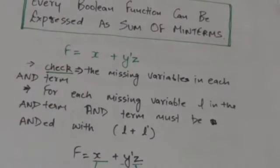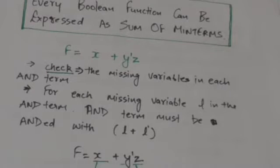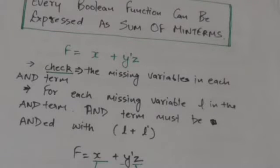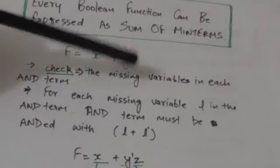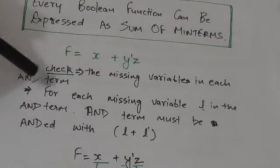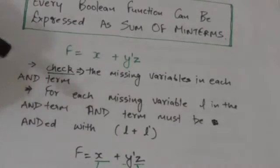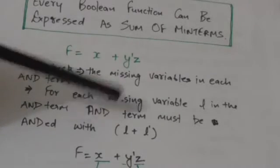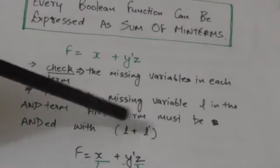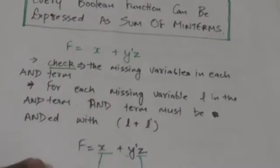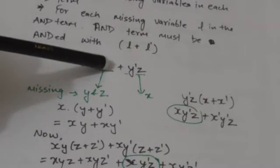Suppose this is a function f and we have to transform it into a sum of minterms. We have to express it as a sum of minterms. First of all, we will check for the missing variables in each AND term. For each missing variable L in the AND term, we will AND the term with L plus L complement.